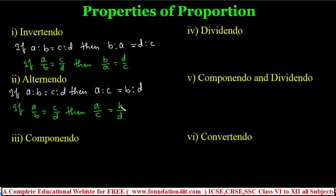Out of the six properties, we can use any one in a given problem. Next, componendo and dividendo: componendo involves addition, dividendo involves subtraction. Invertendo is the reverse, alternendo swaps antecedents and consequents, and now we come to componendo.